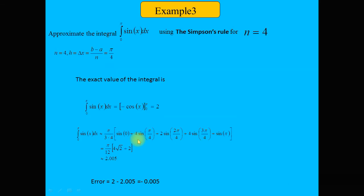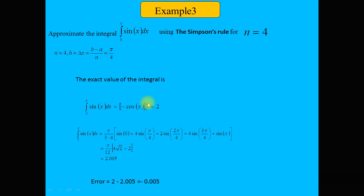Another example: approximate the integral of sin(x) from 0 to π using Simpson's rule with n = 4. The step size h = (b − a)/n = (π − 0)/4 = π/4. The exact result: the integration of sin(x) is −cos(x), and evaluating from 0 to π gives the exact answer of 2.